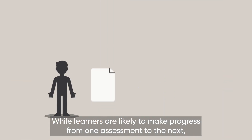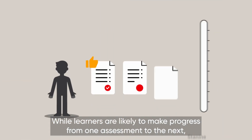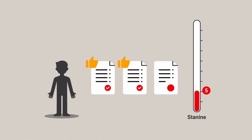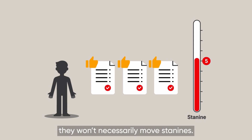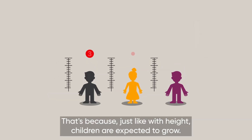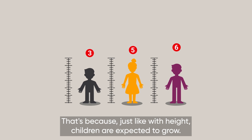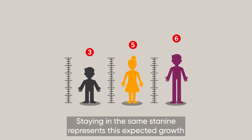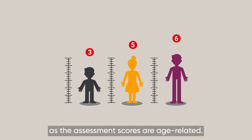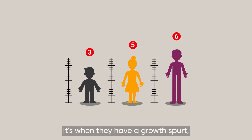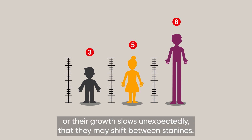While learners are likely to make progress from one assessment to the next, they won't necessarily move STAN9s. That's because, just like with height, children are expected to grow. Staying in the same STAN9 represents this expected growth, as the assessment scores are age-related. It's when they have a growth spurt, or their growth slows unexpectedly, that they may shift between STAN9s.